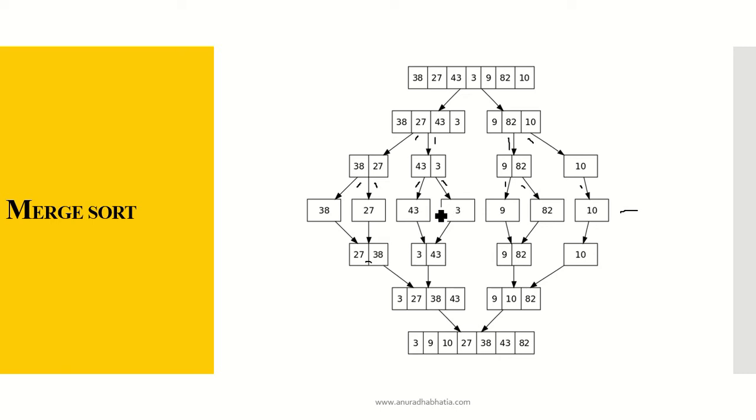43, 3 becomes 3 and 43. 9, 82 are already sorted and merged here. 10 remains as it is.